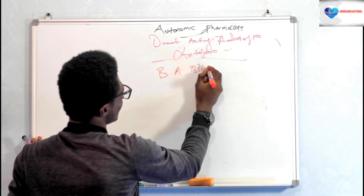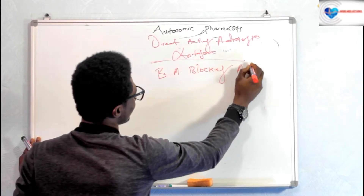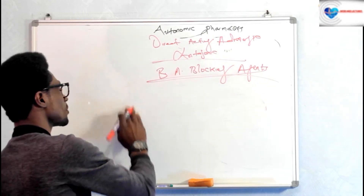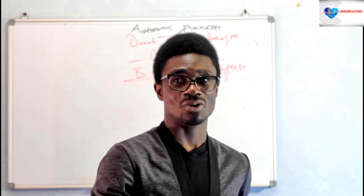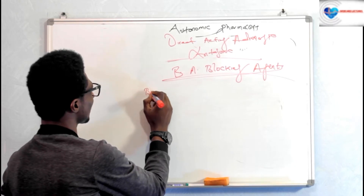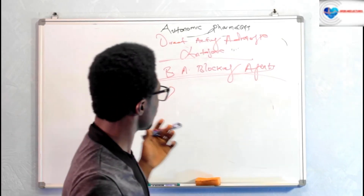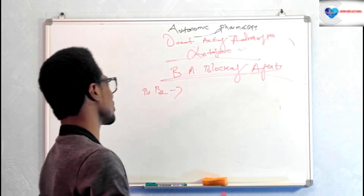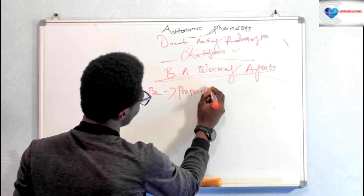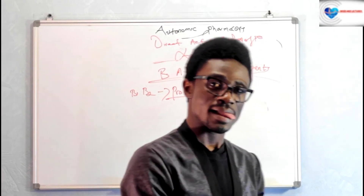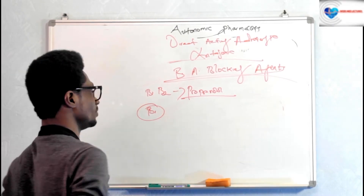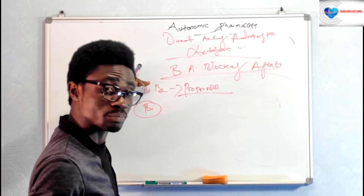First we have the non-selective beta blockers, meaning they block both beta-1 and beta-2 receptors. A good example of a drug that blocks both beta-1 and beta-2 is propranolol. Propranolol is the classic non-selective beta blocker.